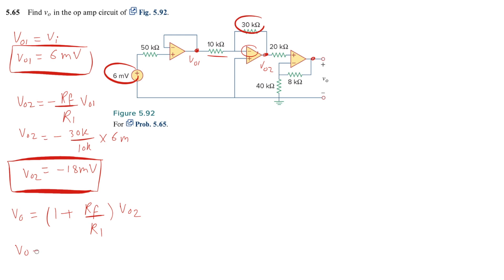So V out is 1 plus what is RF here? This is RF 8K over R₁. What is R₁ in this case? 40K times V₀₂ which is minus 18 milli.